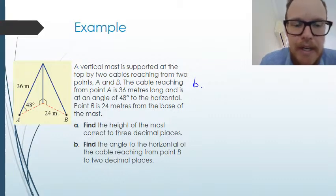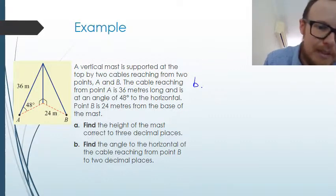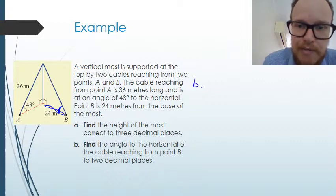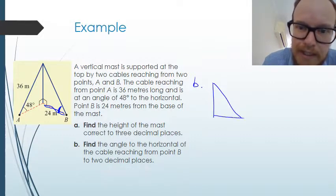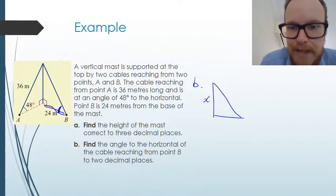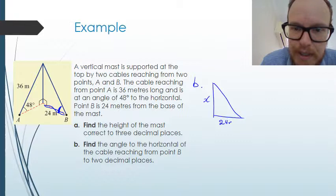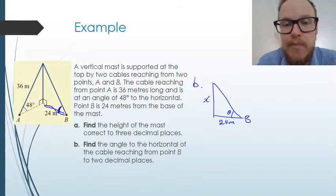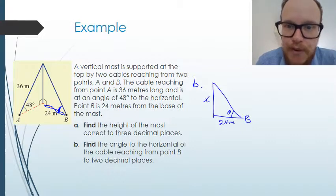For part B we are trying to find out this angle here on our actual three-dimensional image. The angle to the horizontal of the cable reaching from point B to two decimal places. So we draw that triangle here. That's our height of our vertical mast X. We know that this is 24 meters from the base and we want to try and find this angle here. We're going to label point B here on the two-dimensional triangle as well to make sure it's nice and clear which triangle we're talking about.